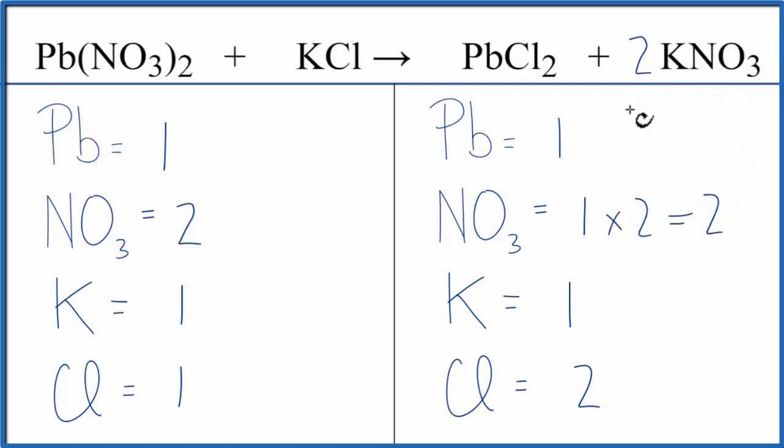And then potassium, 1 times the 2, 2 of those. Let's fix the potassiums. We could just put a coefficient of 2 in front of the KCl. This 2 applies to everything. So we have 1 K times 2. Potassiums are balanced. 1 chlorine times the 2. And now the chlorines are balanced, and we're done.